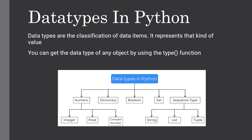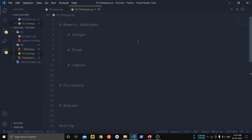In Python, data types are classified into five different types: numeric, dictionary, boolean, set, and sequence type. Numeric data type is further classified as integer, float, and complex number. The sequence types are further classified as string, list, and tuple. Now let us see the difference between all the data types.